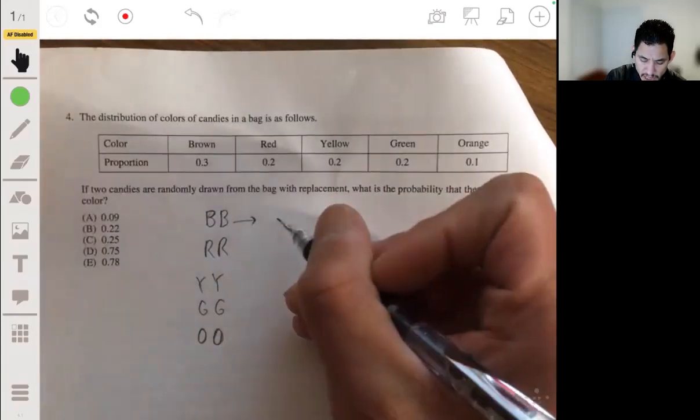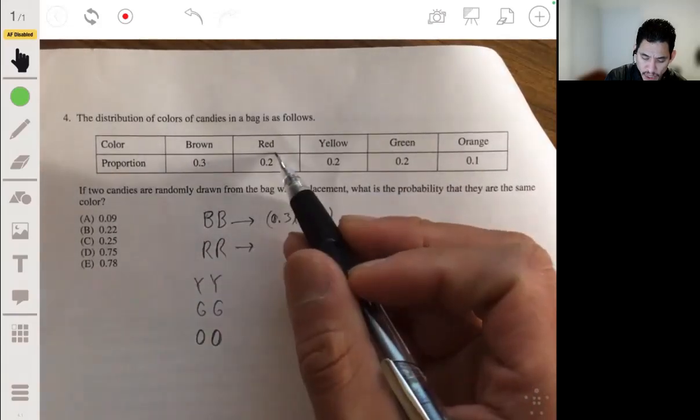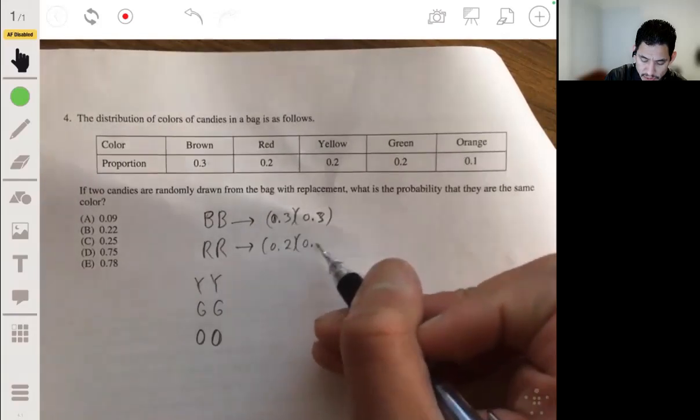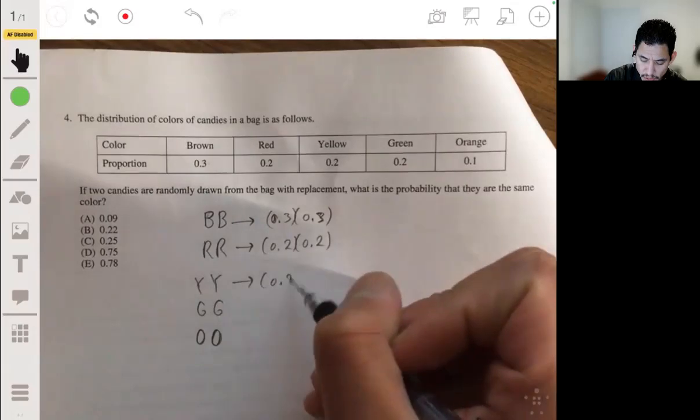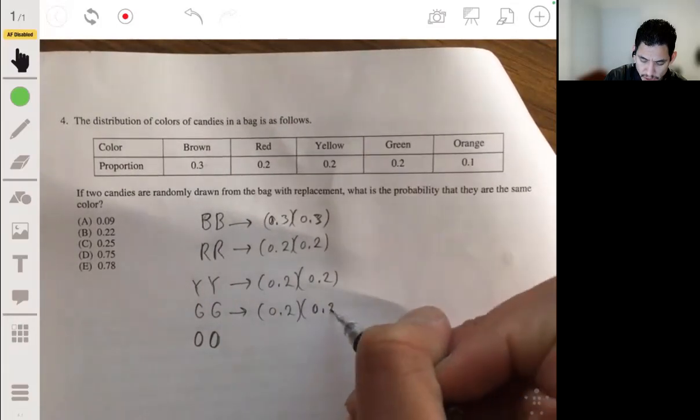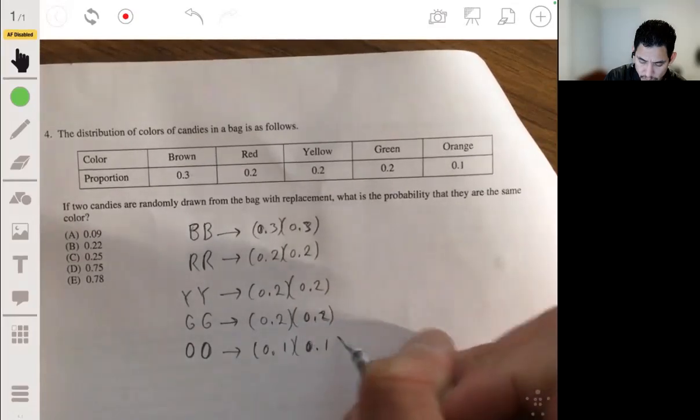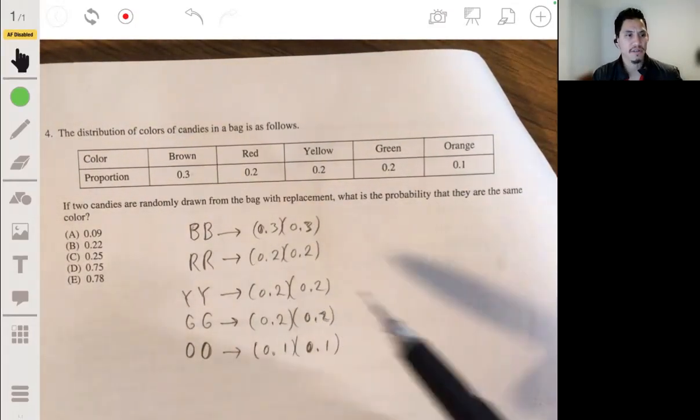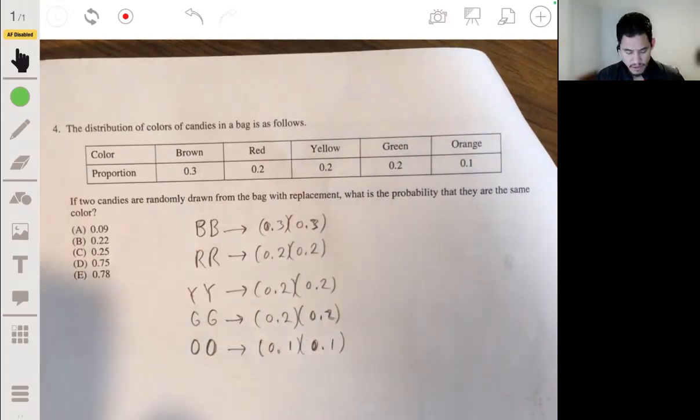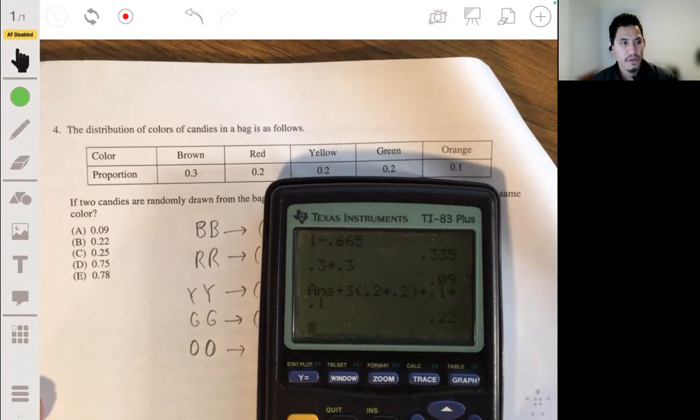So the probability of drawing a brown candy and a brown candy will be 0.3 times 0.3. But you could also draw a red and a red. So using that same idea, it's 0.2 times 0.2, or a yellow and a yellow, which is 0.2 times 0.2 as well. All these are 0.2 times 0.2 with the multiplication rule. Or drawing two oranges in a row, 0.1 times 0.1. Now since any of these will satisfy drawing two candies of the same color, you want to add these probabilities together. So you use your calculator. And cranking that out, you'll get that the answer is 0.22. And your answer will be B.